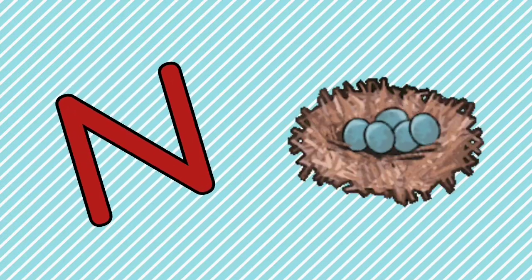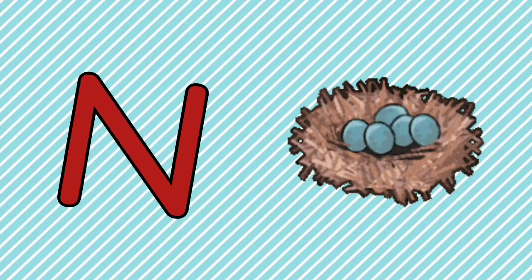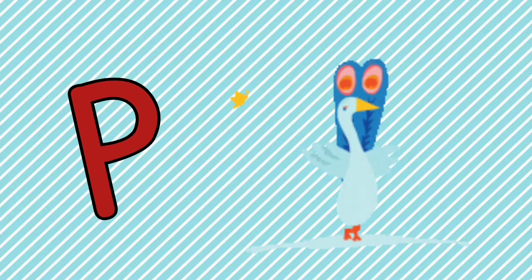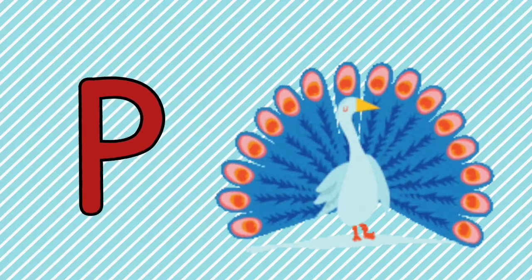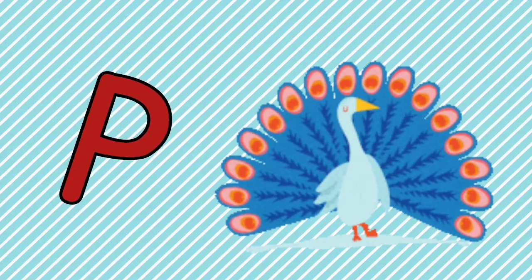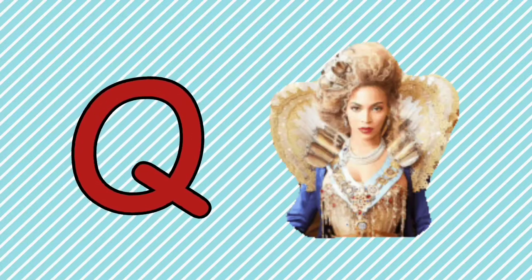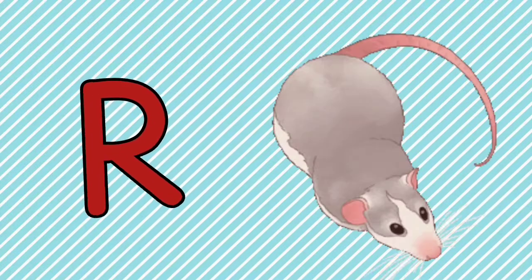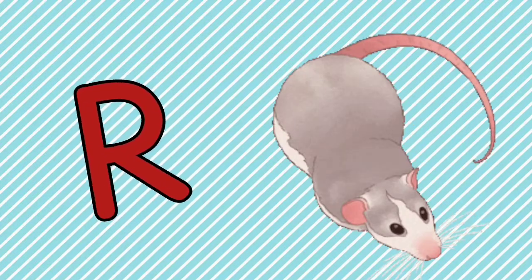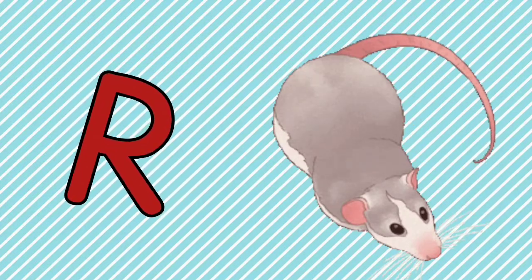N for nest, O for orange, P for peacock, Q for queen, R for red.